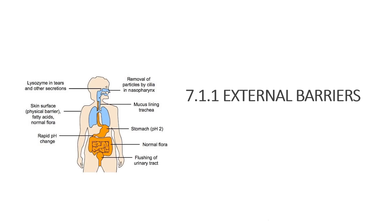Let's move to the first part of the innate immunity system: the external barriers. From this diagram, you can see a few examples of parts of the body and the mechanisms involved in the external barrier system.